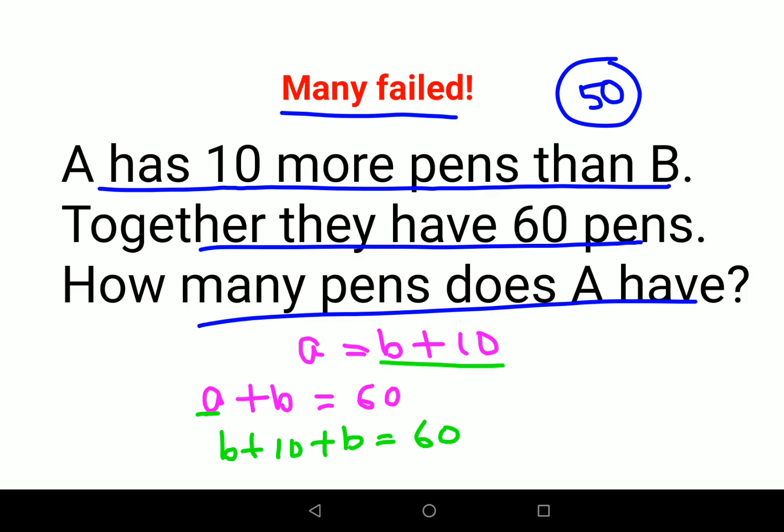So now here we get 2B plus 10 equals to 60. So subtracting both sides by 10, you get 2B equals to 50. So B equals to 25.